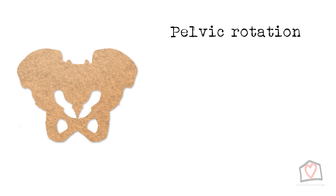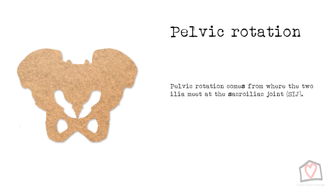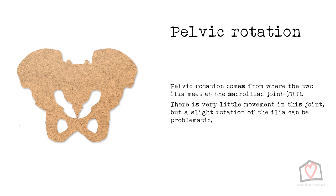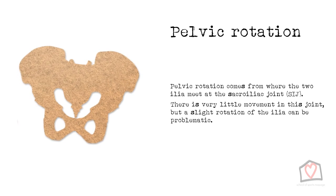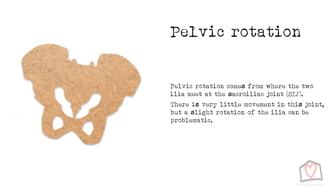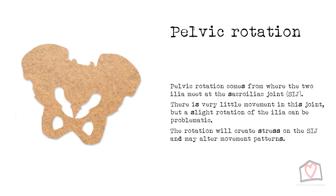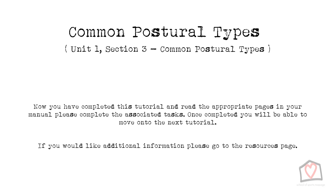Finally, you can get a pelvic rotation. This rotation comes from where the two ilia meet at the sacroiliac joint, the SIJ. There is very little movement in this joint, but a slight rotation of one or the other ilia coming forward or back can be problematic. The rotation will create stress on the SIJ and may alter movement patterns. Now we have had a basic look at neutral posture, the spine and the pelvis, you can complete the quiz for this section and then move on to common postural deviations, where you will see these spinal and pelvic dysfunctions appear regularly.